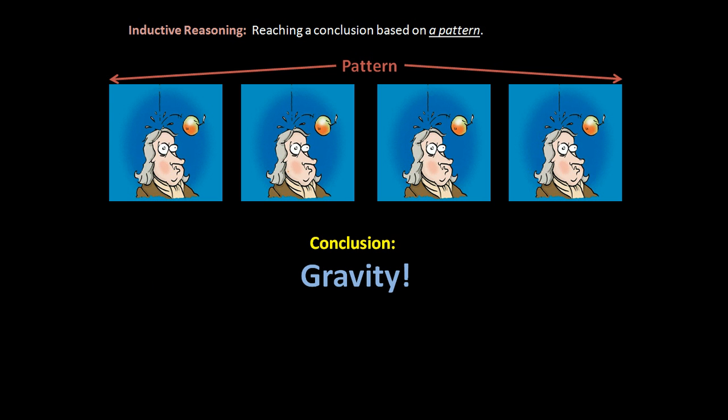So we know that we drop an apple hits the guy in the head, drop an apple hits the guy in the head, apple falls hits the guy in the head. What's our conclusion? He reaches the conclusion oh, that must be gravity. Right. So this is an idea of inductive reasoning where we look and we find this pattern of an apple falling on your head.